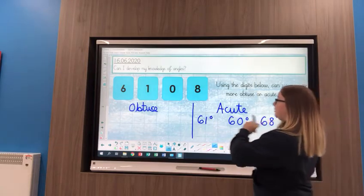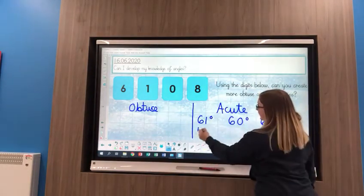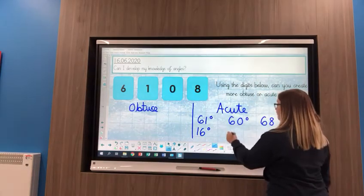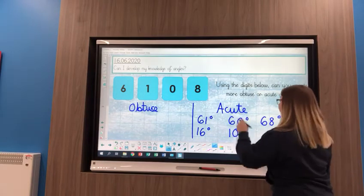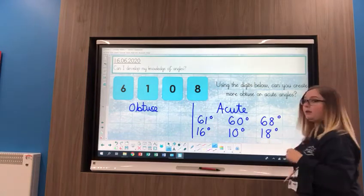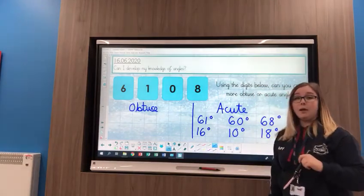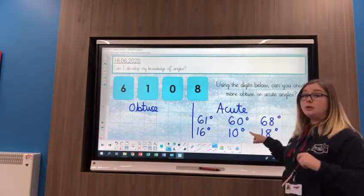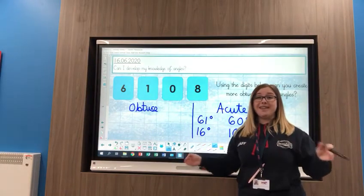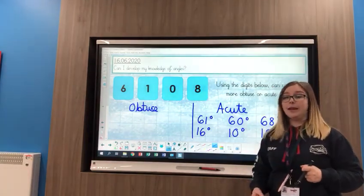Now I'm going to go with my 1. 1 and 6, 16 would be an acute angle. 1 and 0, 10 would be an acute angle. 1 and 8, 18 would be an acute angle. And you're going to continue to work through these digits to see if you can create more acute angles or more obtuse angles, remembering that obtuse angles are bigger than 90 and that acute angles are smaller than 90.